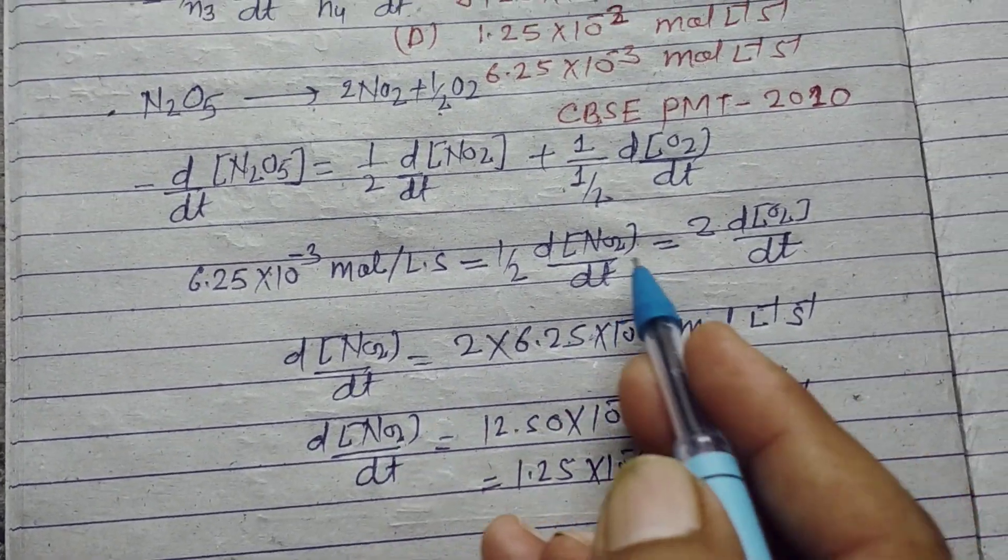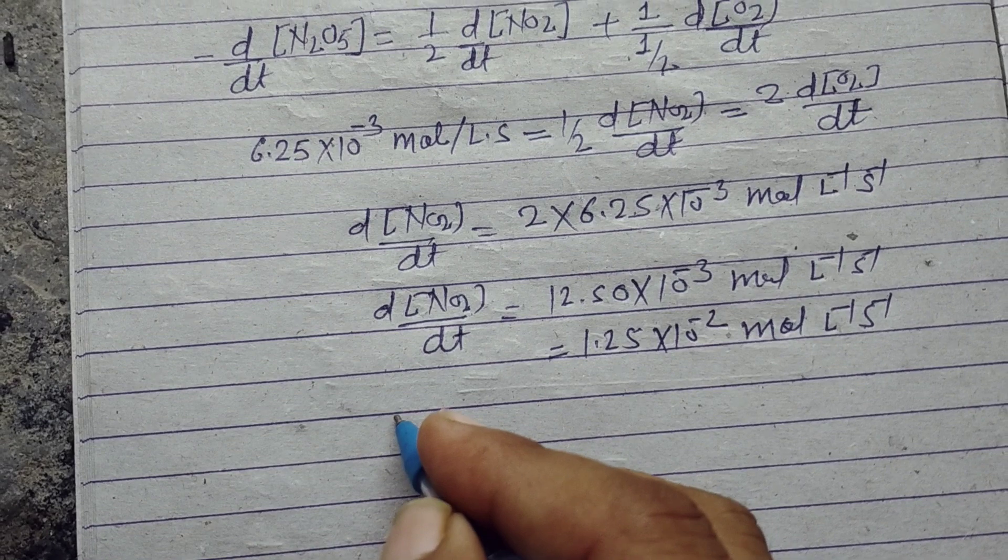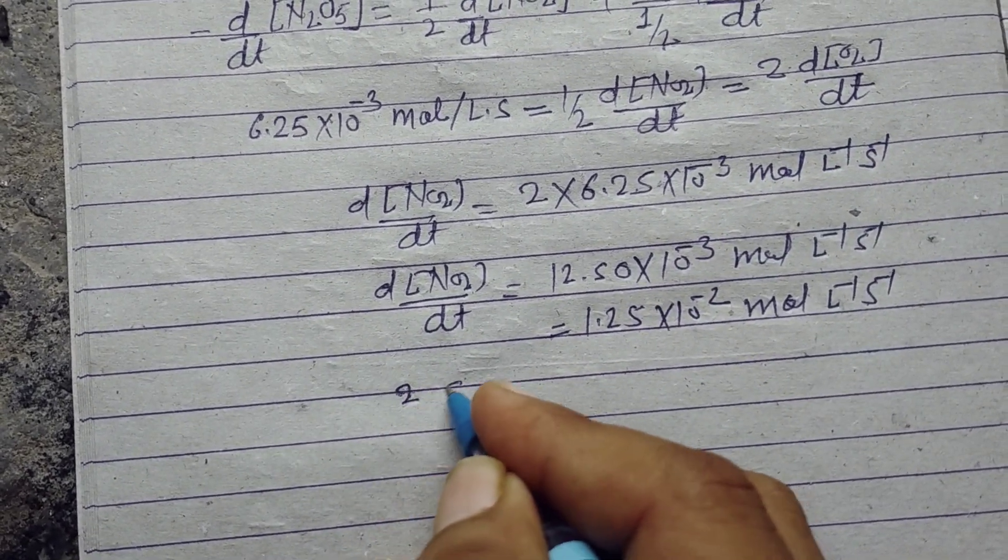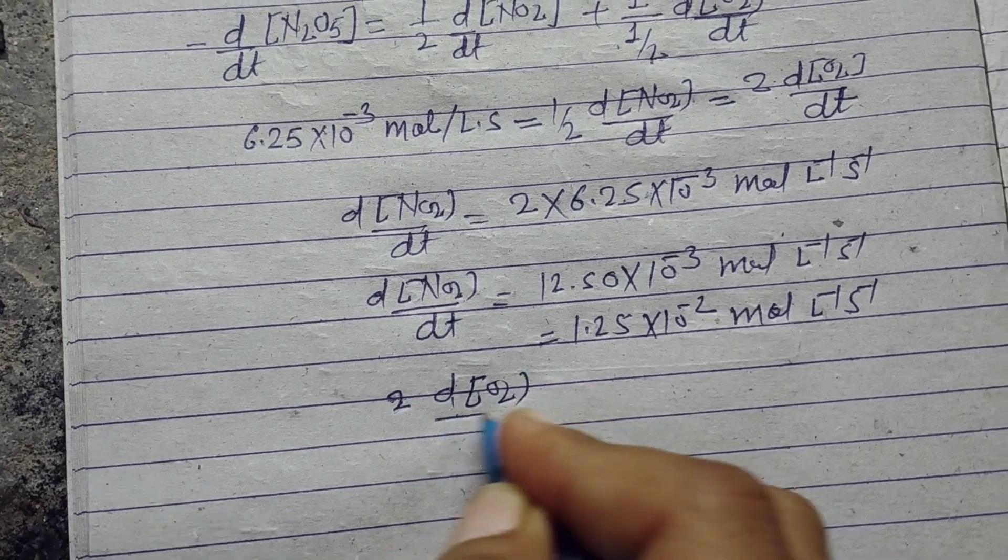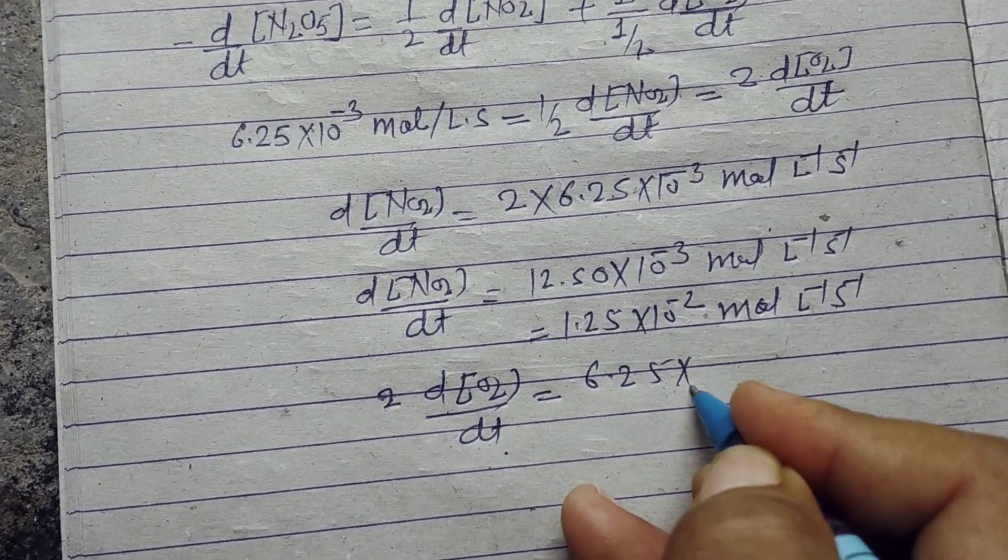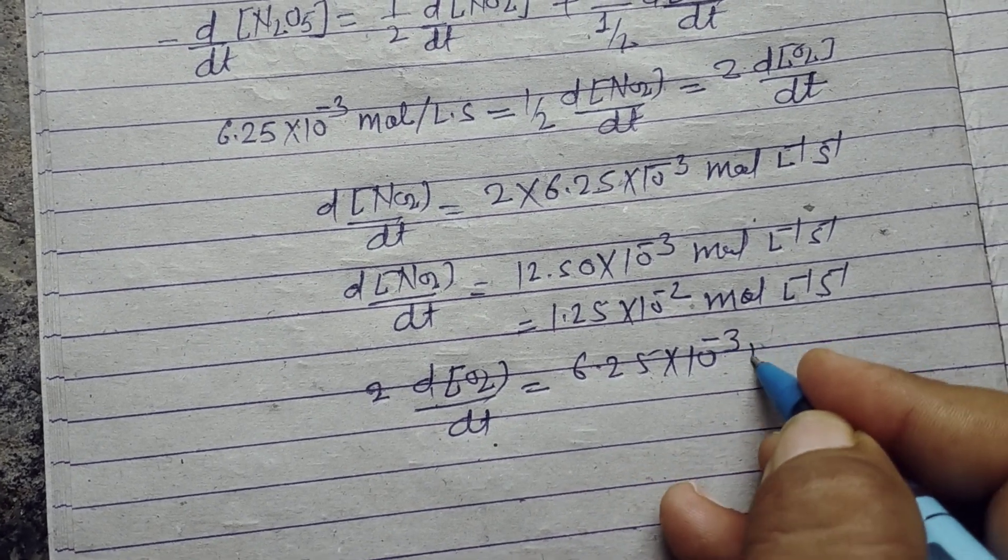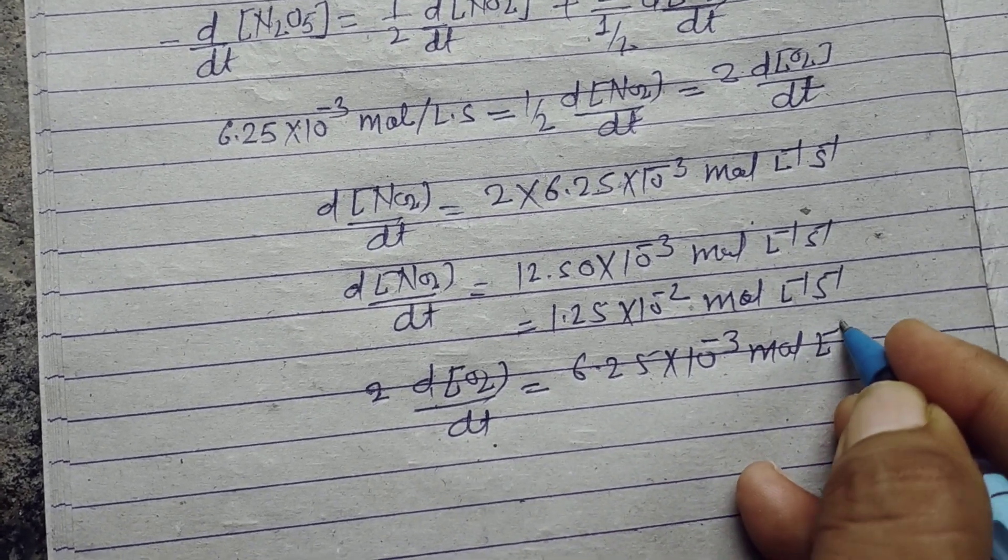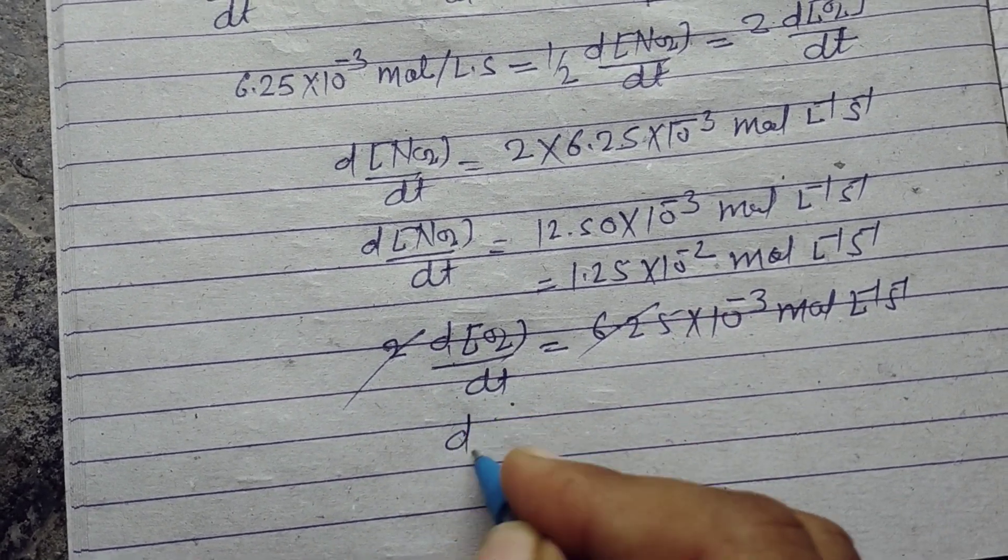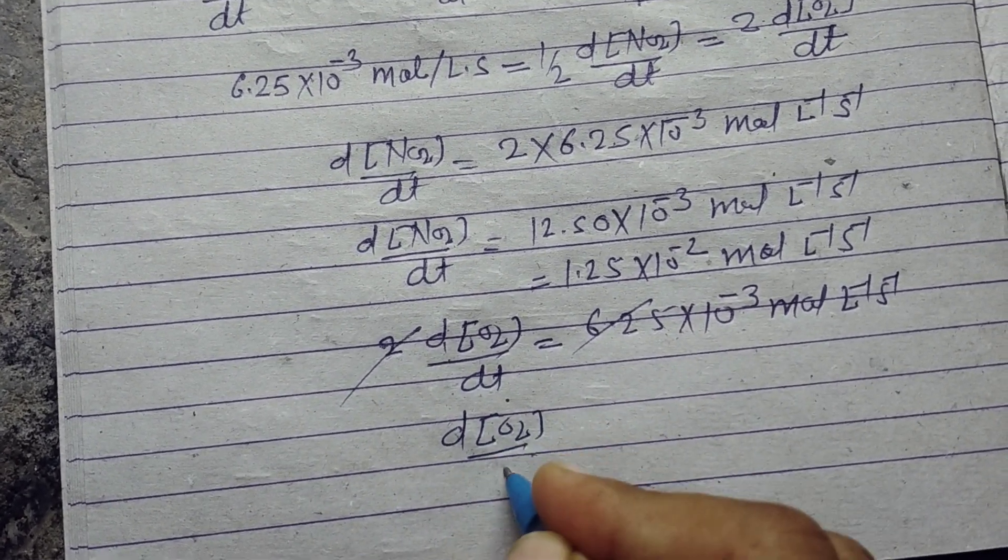Now the rate of formation of O2: 2 times d[O2]/dt equals 6.25×10^-3 mol per liter per second. When we divide by 2, we get the rate of formation of O2.